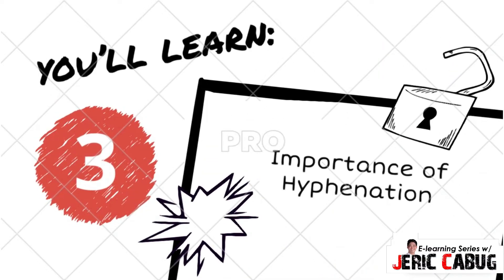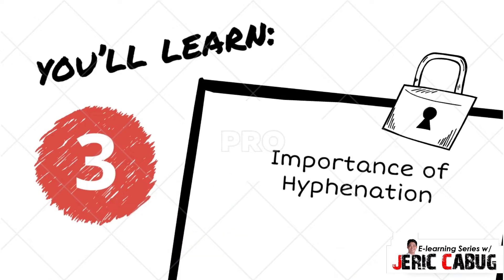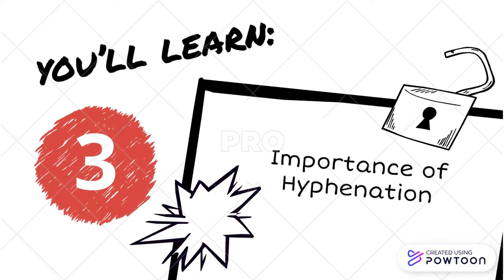Third is the importance of hyphenation. If you aren't a fan of hyphens, you might want to train yourself to like them. Not placing hyphens correctly in your sentences can take the meaning out of the text or the context, and frankly, you want your readers to understand what you write. For example: 'two-year-old boy' versus 'two-years-old boy' — which do you think is more effective?